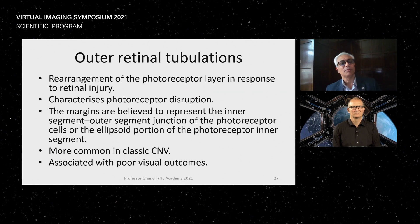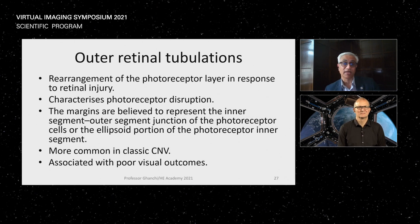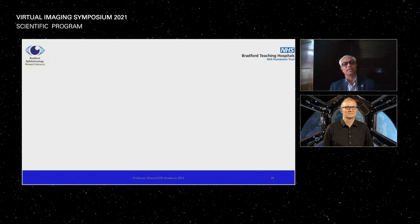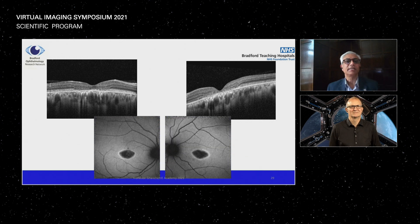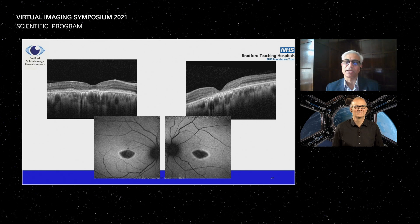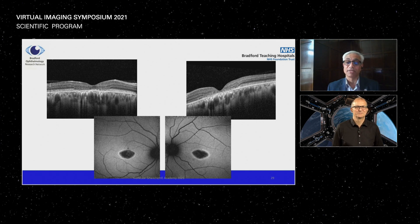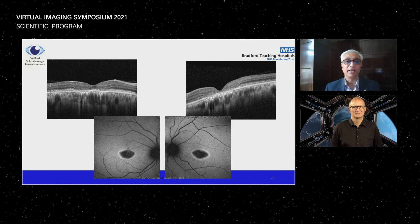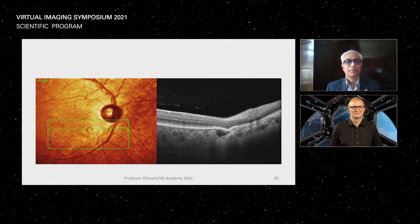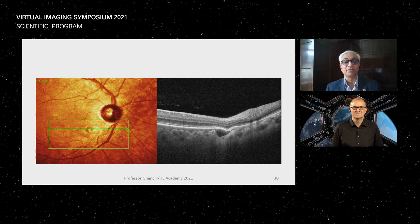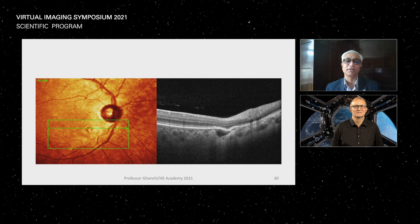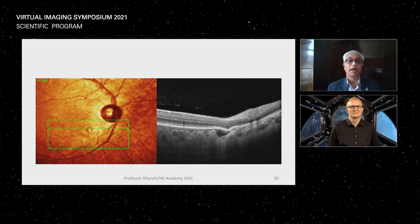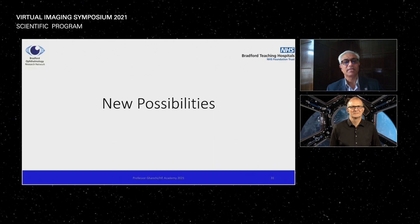Chronic scarring changes such as outer retinal tubulations (ORT) — disruption of photoreceptors — carry a poor prognosis. Some patients presenting with apparent central retinal atrophy on autofluorescence show bilateral symmetrical loss, indicating macular dystrophy rather than macular degeneration. Patients referred with suspected CSR may actually have choroidal excavation or a choroidal coloboma-like cavity.